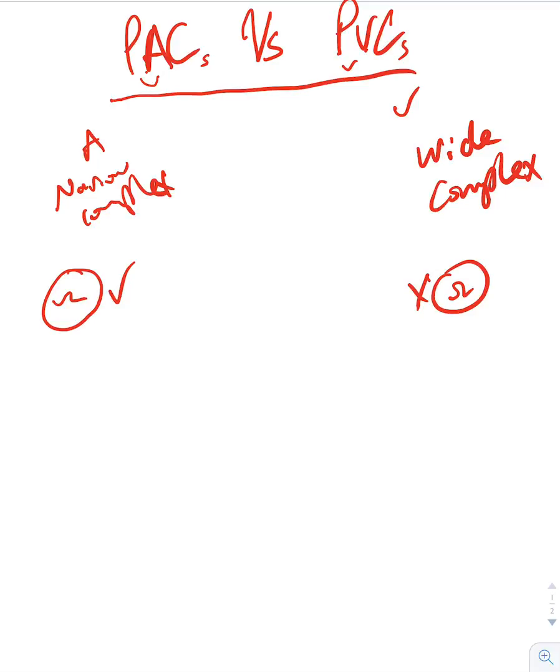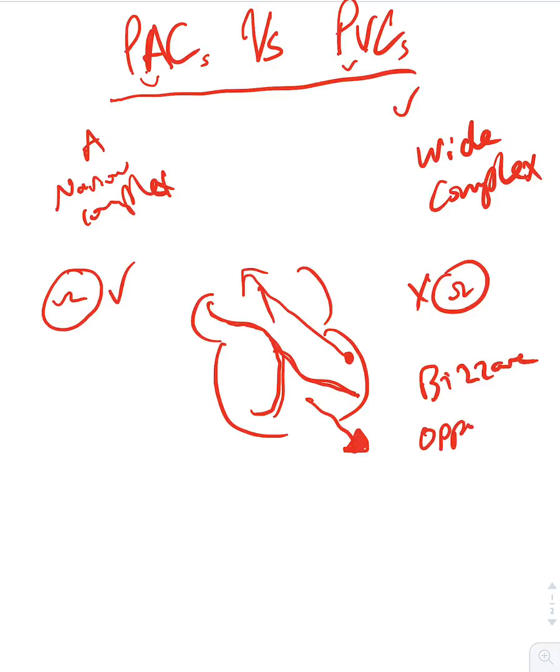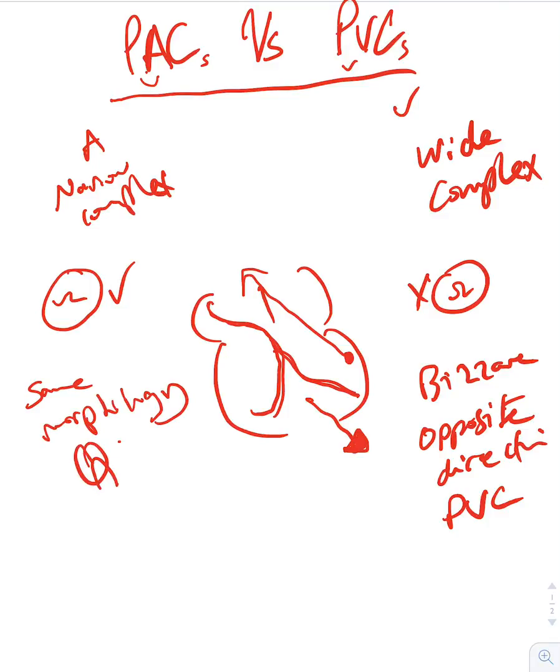Also, PVCs - if you remember how the heart looks like and usually electrical conduction goes down this way and you would have a certain axis to your QRS complex. Let's imagine that there's a PVC originating from this point, all the electrical activity is gonna go the other way around. So in this case, if you have a beat that looks totally bizarre or opposite direction, always think about a PVC because it's happening from the other side, while a PAC usually has the same morphology as your usual QRS.